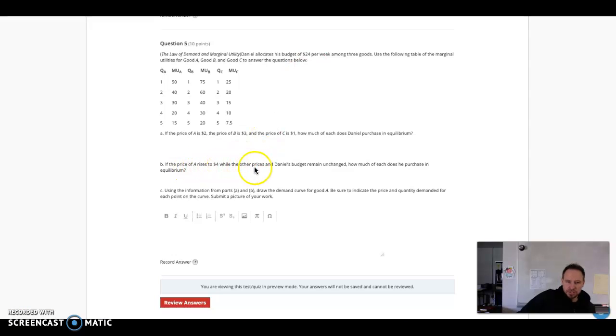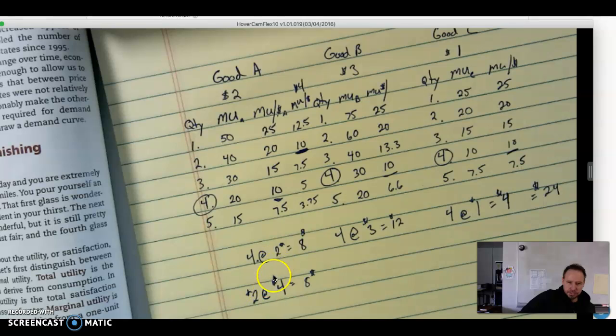If the price rises to $4, how much does he purchase in equilibrium? It would be 2 of A, 4 of B, and 4 of C, and would still be in equilibrium.